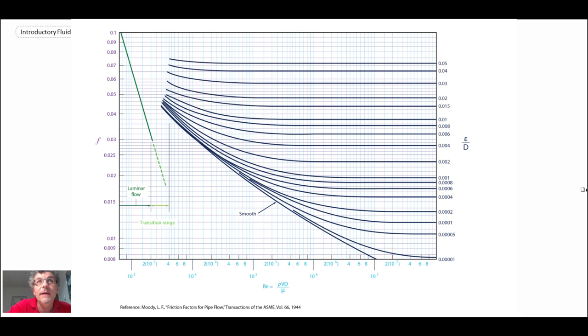And then finally, with very, very rough pipes. And so that is the Moody diagram. That's a diagram that we use quite extensively within mechanical engineering in order to give us the friction factor and estimating the pressure drop within pipe flow.